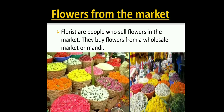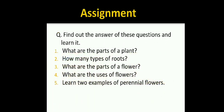That's all about this lesson. I hope you all have understood. Now, assignment. Find out the answers to these questions and learn them: What are the parts of a plant? How many types of roots are there? What are the parts of a flower? What are the uses of flowers? And learn two examples of perennial flowers. Thank you and have a nice day.